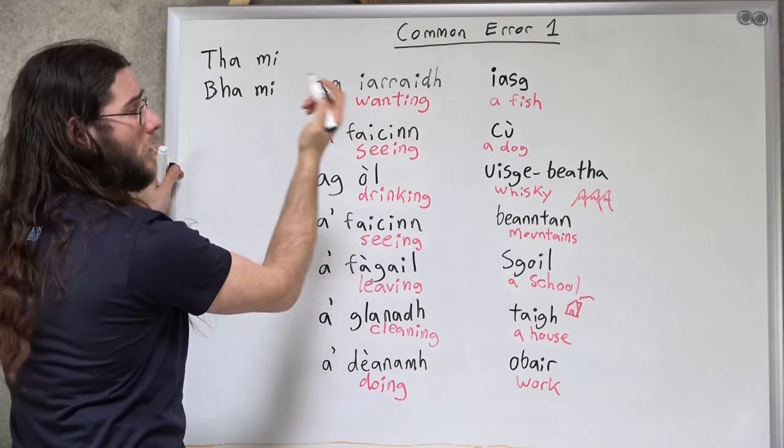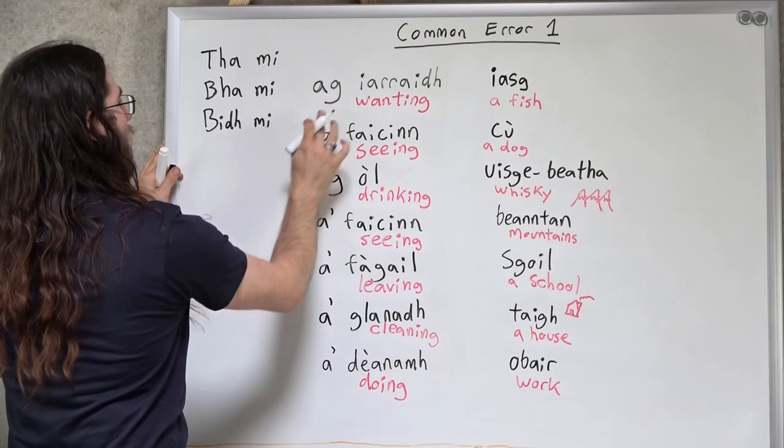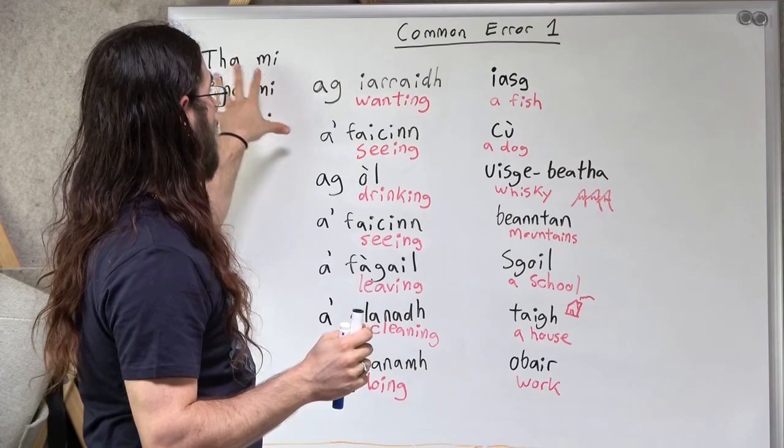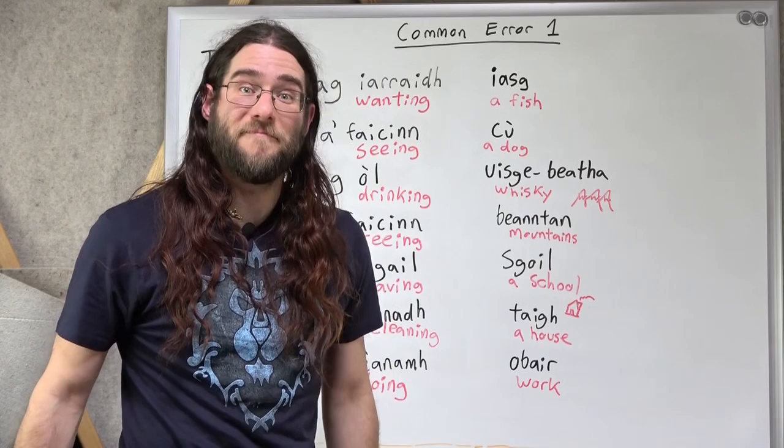There we go. So, bha mi ag iarraidh iasg. In the future, bidh mi ag iarraidh iasg. So you can use these in any tense. In any tense. You just plug in this before. Bha mi ag iarraidh iasg. I want a fish. Straightforward.